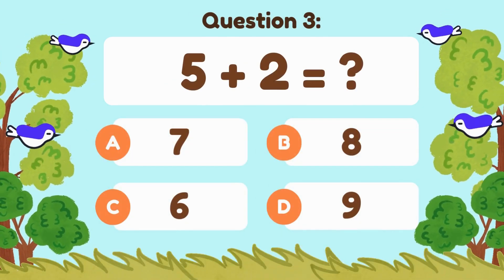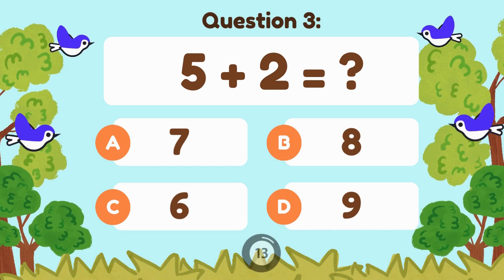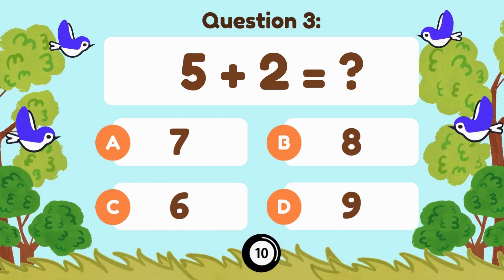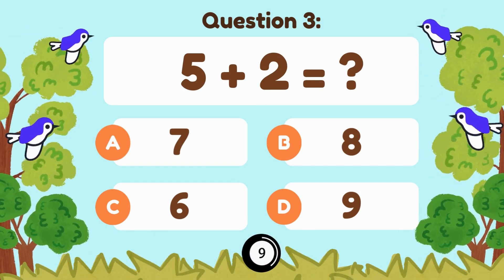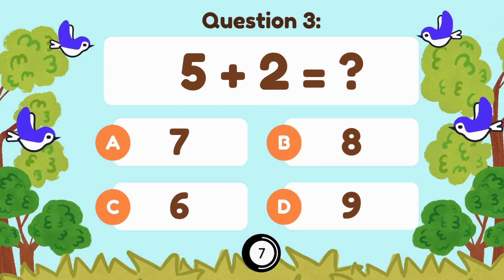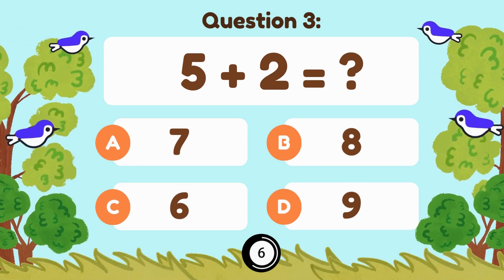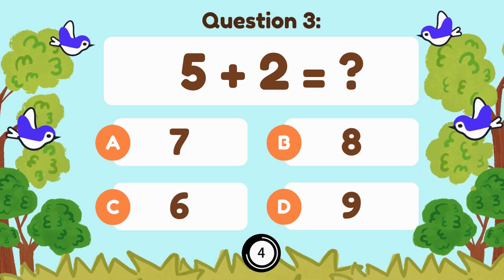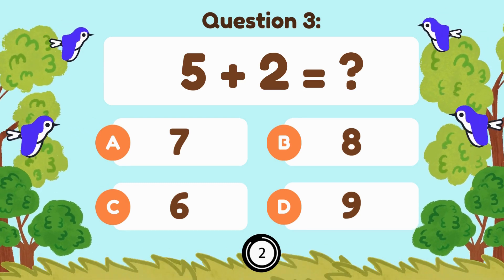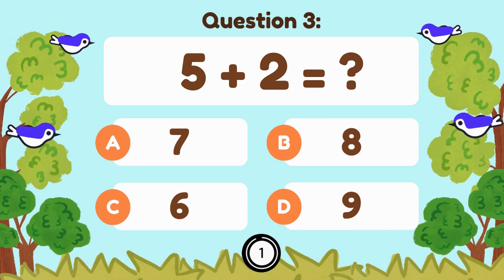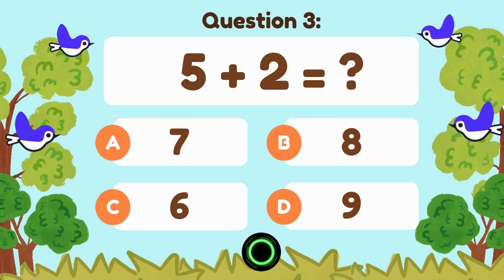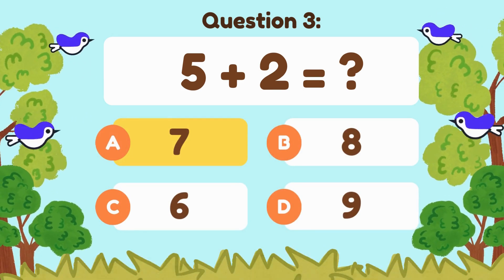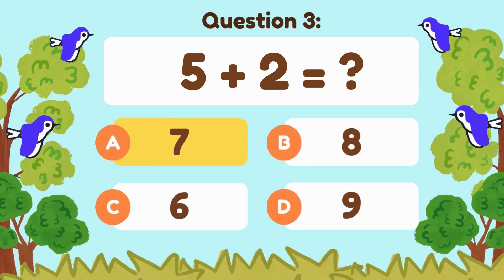5 plus 2 equals... 5 plus 2 is equal to 7.